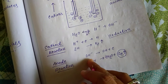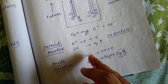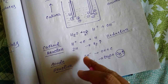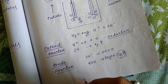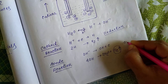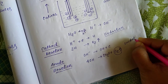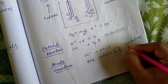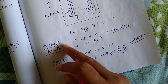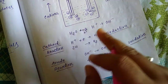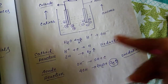At the anode, OH⁻ molecules release electrons — so this is oxidation. In the anode, oxidation takes place, and in the cathode, reduction takes place.